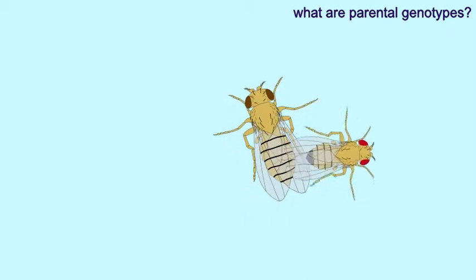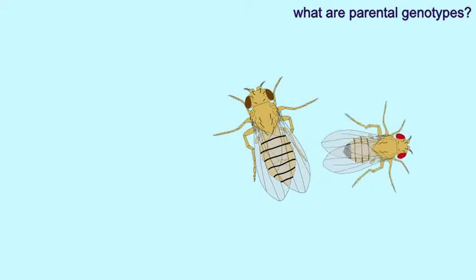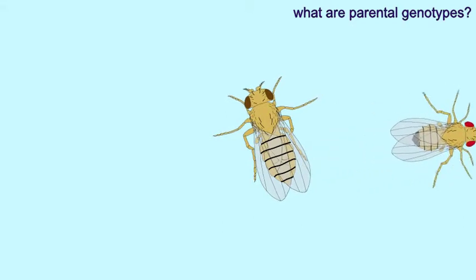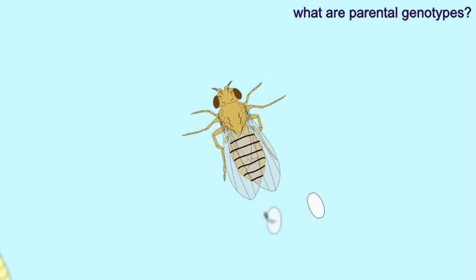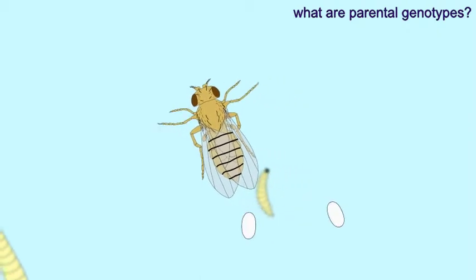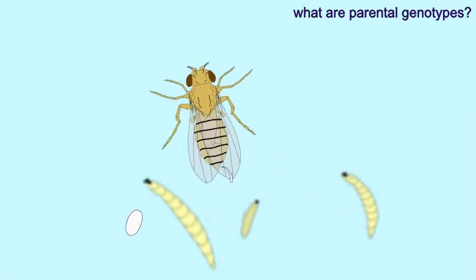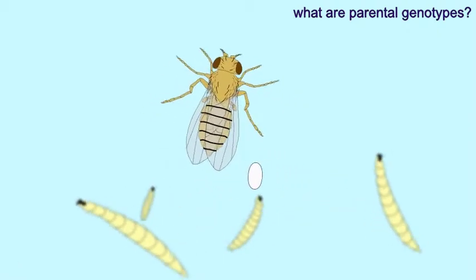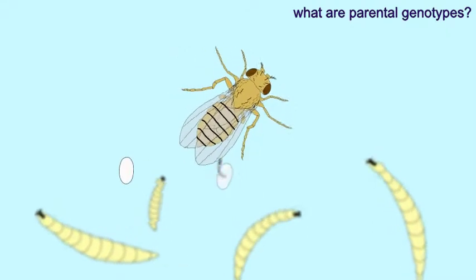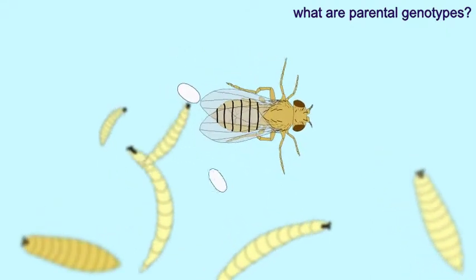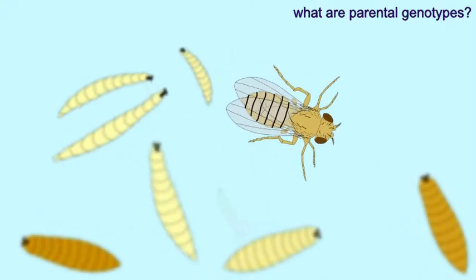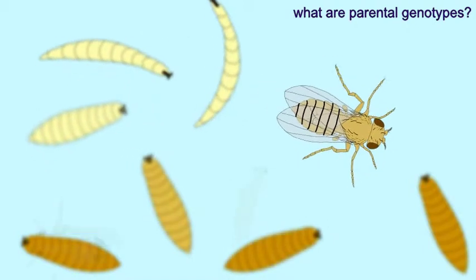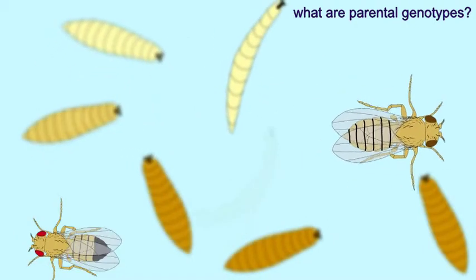The male possesses red eyes, the wild-type condition, but it is unknown whether the male is homozygous for the wild-type allele of the sepia gene or heterozygous. Since all of the F1 offspring possess the wild-type brick-red eyes,